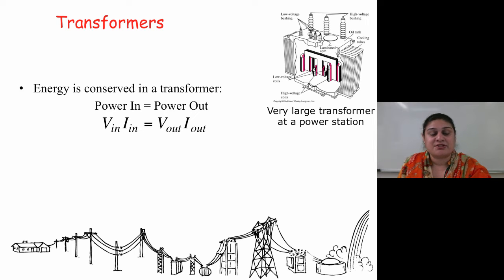Energy is conserved in a transformer. Power in has to equal power out: V in times I in equals V out times I out.